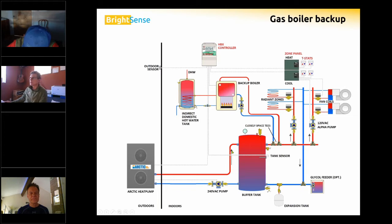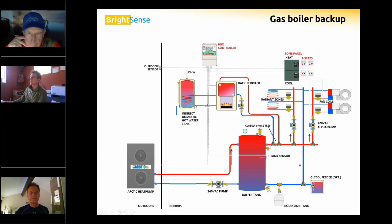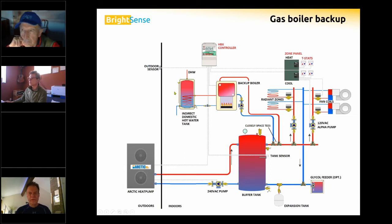For homes that have natural gas anyway — clients who want to keep a gas range or fireplace — if we're paying the monthly connection charge, we could use a natural gas boiler for backup, piped on-demand into the supply piping. This is an actual system being installed right now. The controls and piping are very flexible.